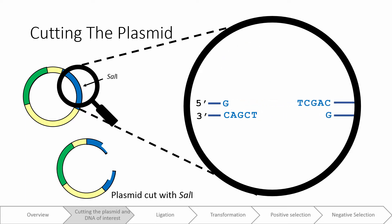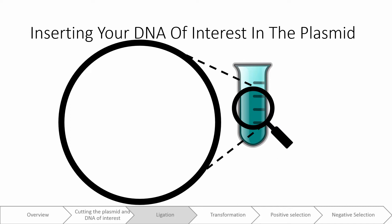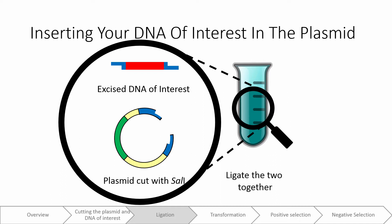Here is a schematic of what our plasmid cut with Sal1 might look like. If we looked inside our tube, we would see that we now have both our excised DNA of interest and our plasmid cut with Sal1. We want to ligate the two of them together.